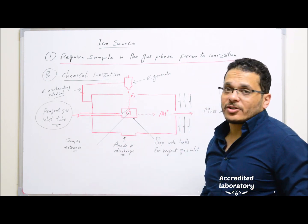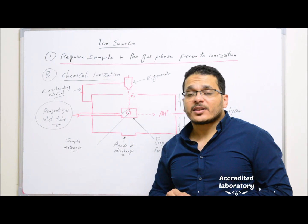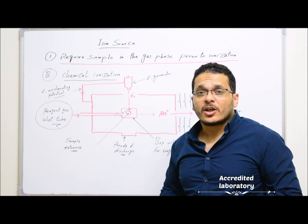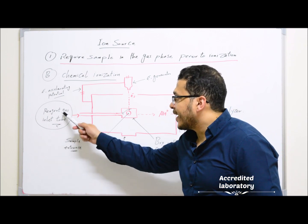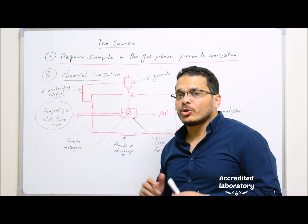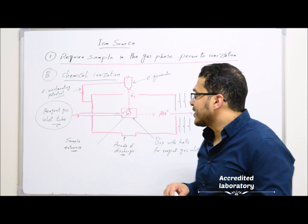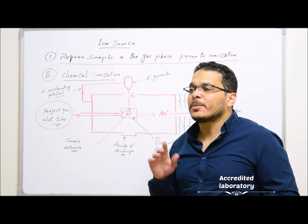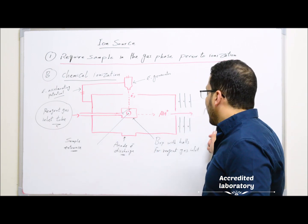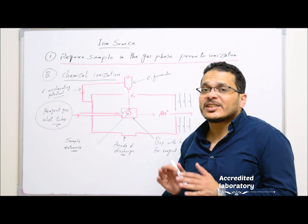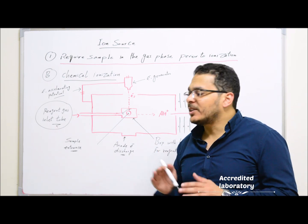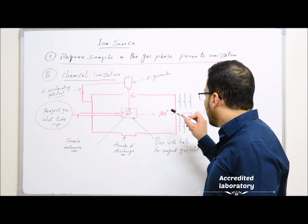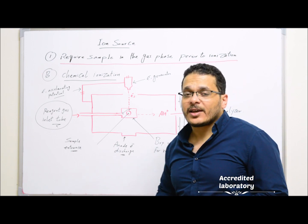The other ion source that requires the sample in the gas phase prior to ionization is chemical ionization. In this case, ionization will not be by electrons as in electron ionization, but will be by reagent gas ions through ion-molecule reactions. The ionized sample molecules will not be fragmented — they will be sent as they are to the mass analyzer. So there is only ionization, but no fragmentation in this case.